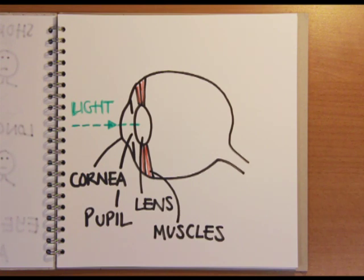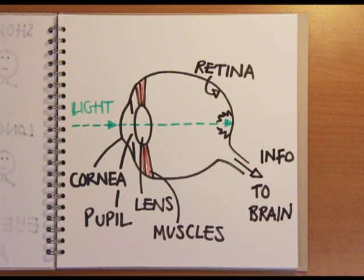This bends the light by different amounts in order to focus it onto the retina which sends the information to our brain.